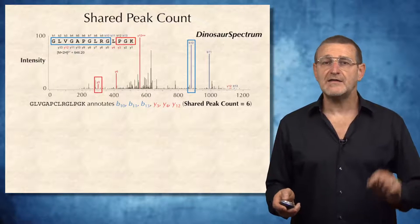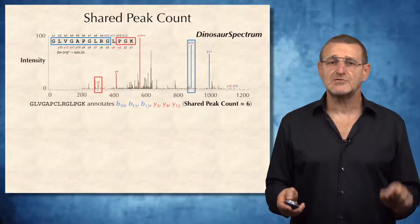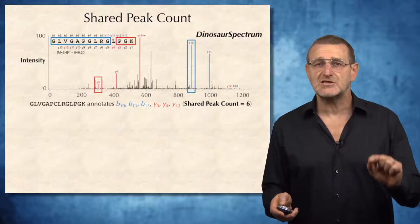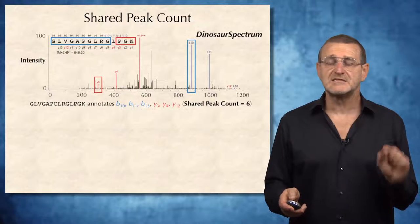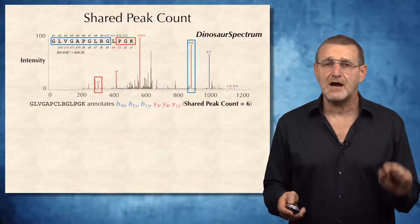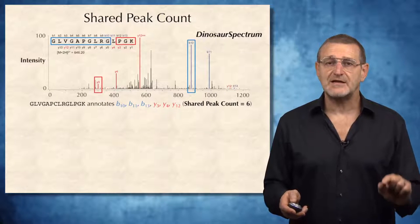In total, we were able to annotate 6 peaks in the spectrum using this conjecture about the peptides that generated the spectrum. And we say that the shared peak count for this spectrum and peptide is 6.